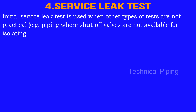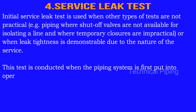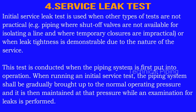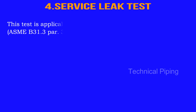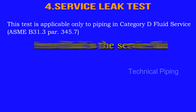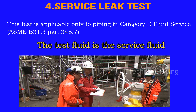Number 4: Service Leak Test. Initial service leak test is used when other types of tests are not practical — for example, piping where shut-off valves are not available for isolating a line, and where temporary closures are impractical, or when leak tightness is demonstrable due to the nature of the service. This test is conducted when the piping system is first put into operation. When running an initial service test, the piping system shall be gradually brought up to the normal operating pressure, and it is then maintained at that pressure while an examination for leaks is performed. This test is applicable only to piping in category D fluid service. For more reference: ASME B31.3 para 345.7.